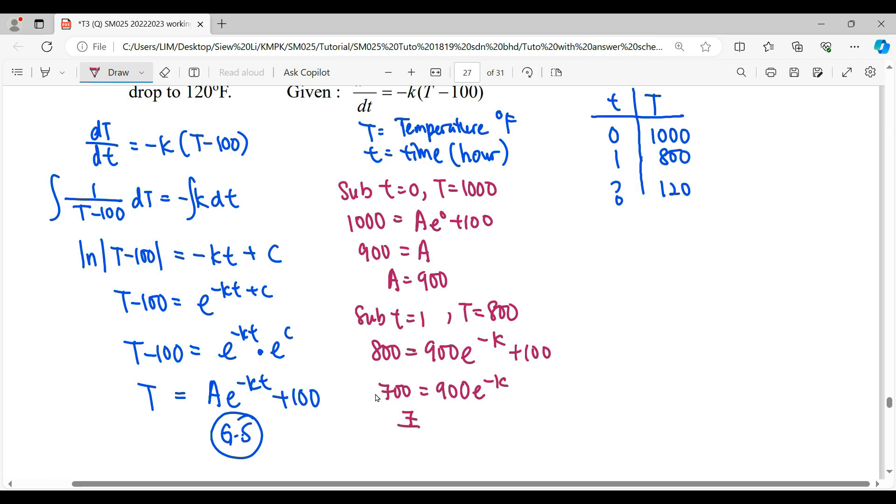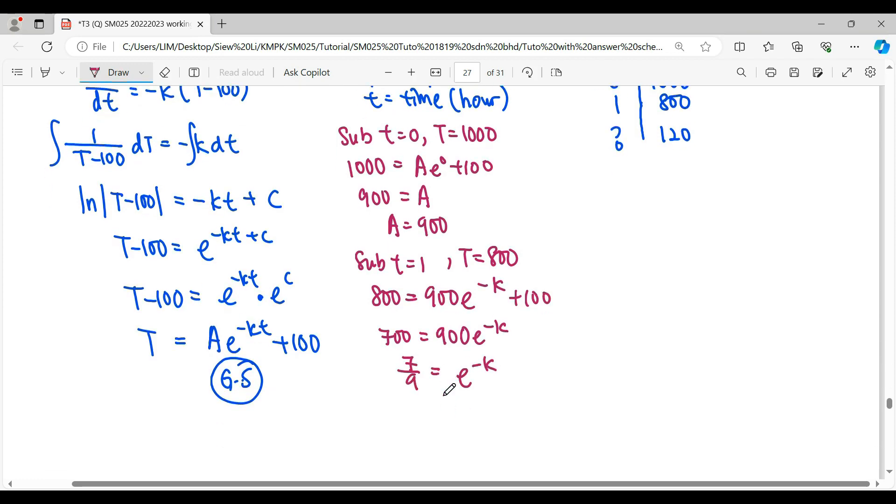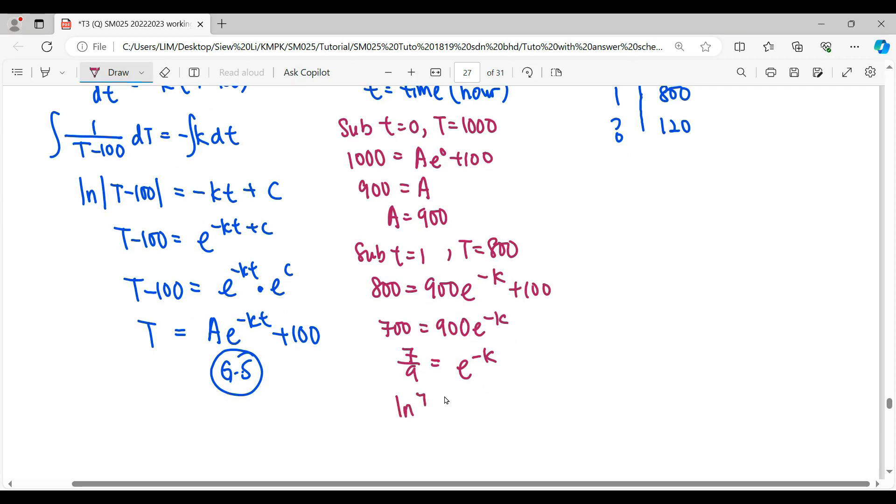Move the coefficient multiply, it will become division, becomes 7 over 9. When we move the e, it will become back to the ln. So lastly, the coefficient negative, when we divide, it will become negative ln(7/9).